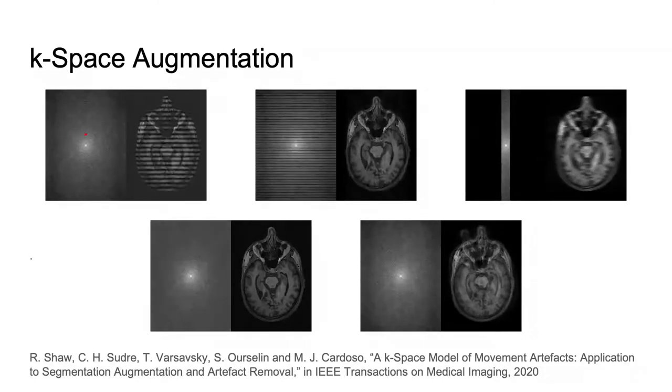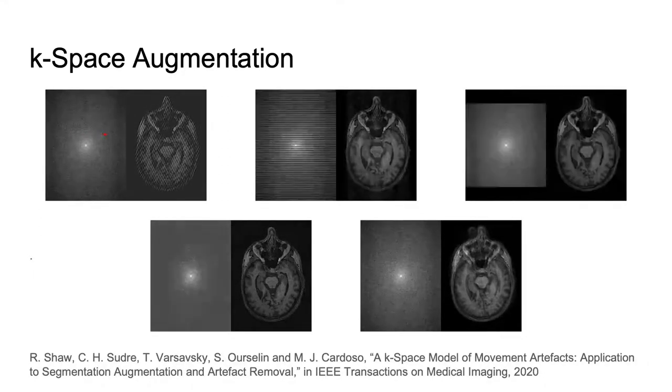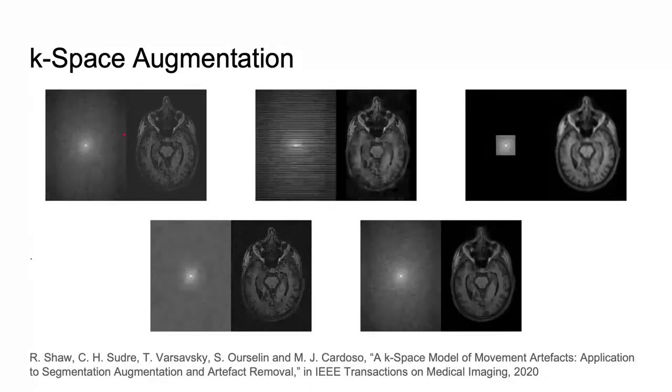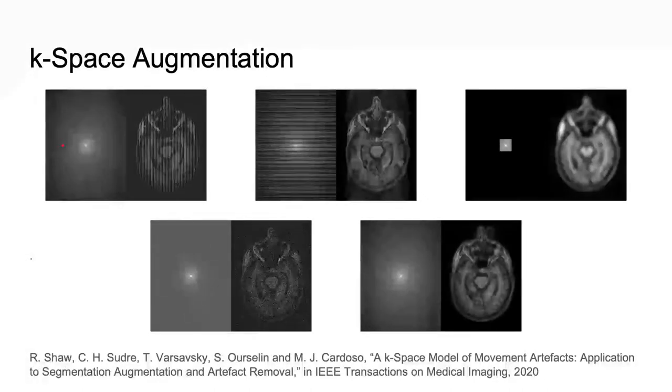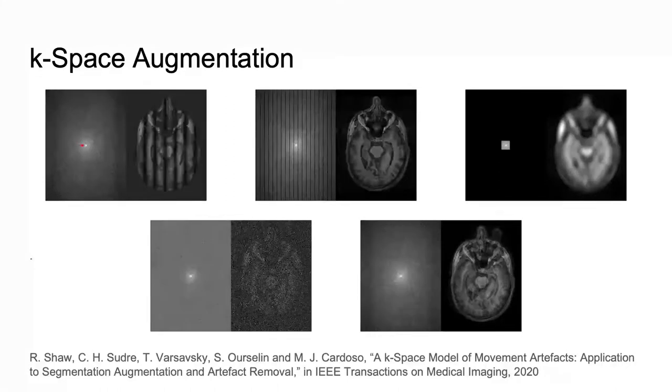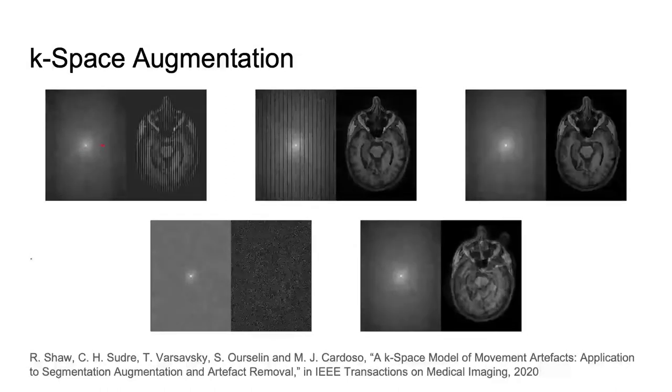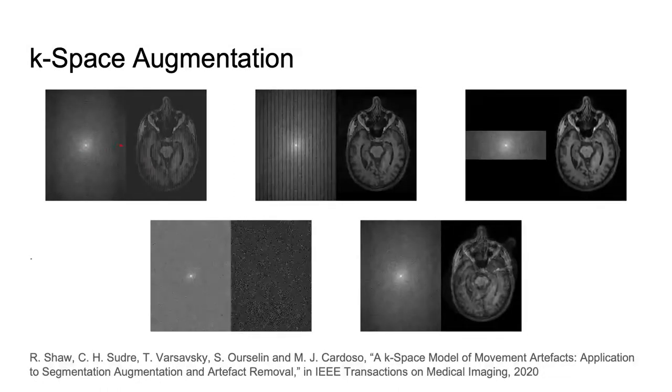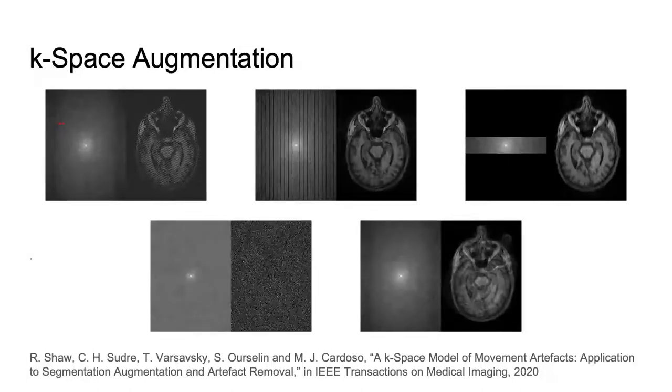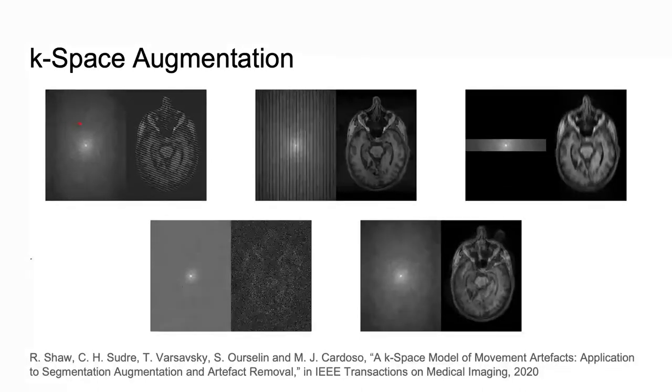RF spike artifact is characterized by dark stripes over the image caused by the convolution of spikes in k-space of very high or low intensity during the Fourier transform. To model this, we sample uniformly the spike location in k-space which defines the angle and frequency of the stripes and its magnitude which defines their intensity.